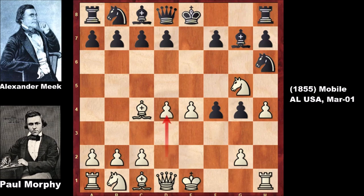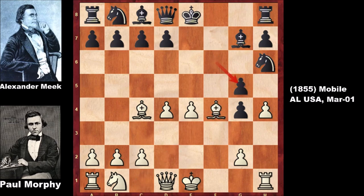Morphy played d4, showing his intention — he wants to sacrifice the knight. Before the push, the pawn advances, and where is the knight going? Morphy played bishop takes on f4, and black captured the knight, but then capturing back, it appears that Morphy has good compensation.